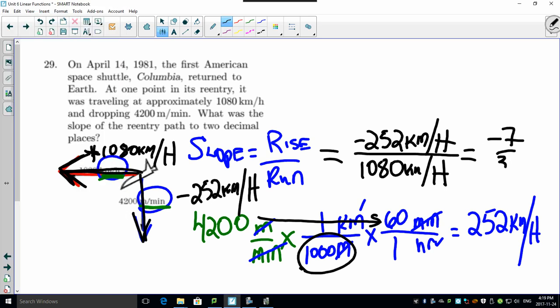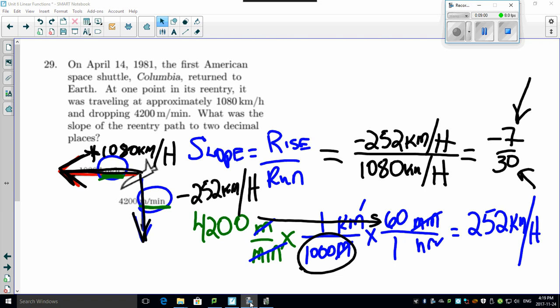So this works out to be negative 7 over 30. So in other words, for every 7 kilometers it drops, it travels forward 30 kilometers. That's how you interpret this thing, and that becomes a really cool question for us.